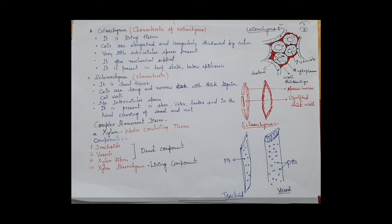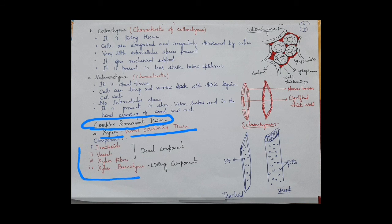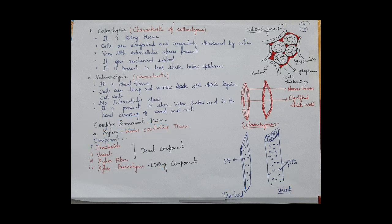Now coming to complex permanent tissue. The first type is xylem. Xylem is a water-conducting tissue. Xylem is made up of four components: tracheids, vessels, xylem fiber, and xylem parenchyma. Tracheids, vessels, and xylem fiber are the dead components, and xylem parenchyma is the living component.